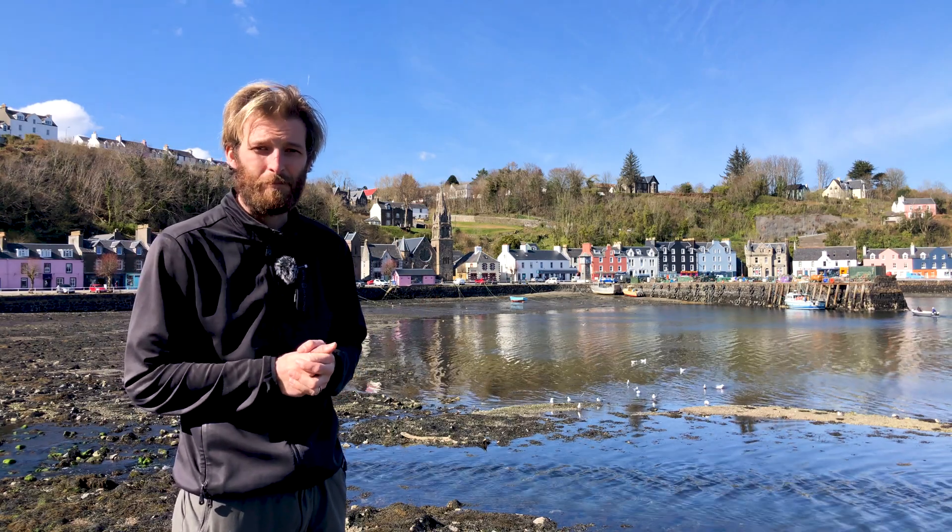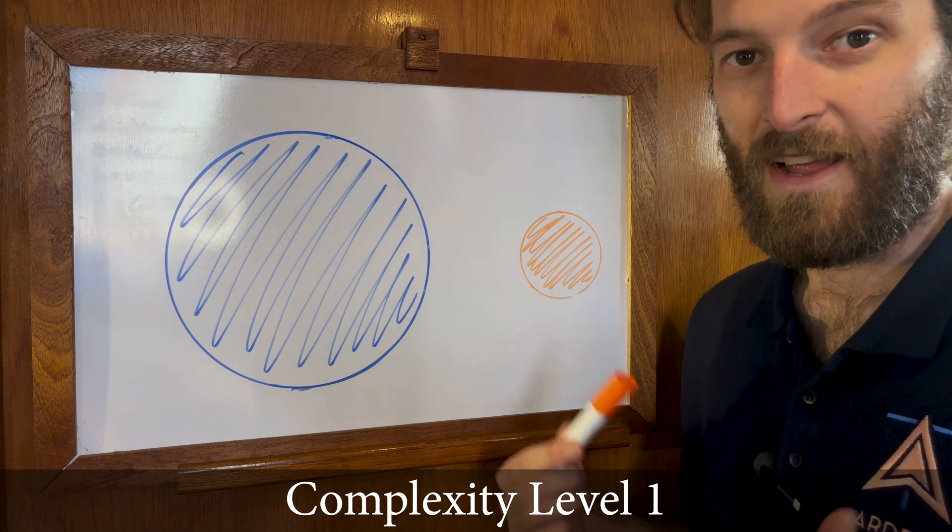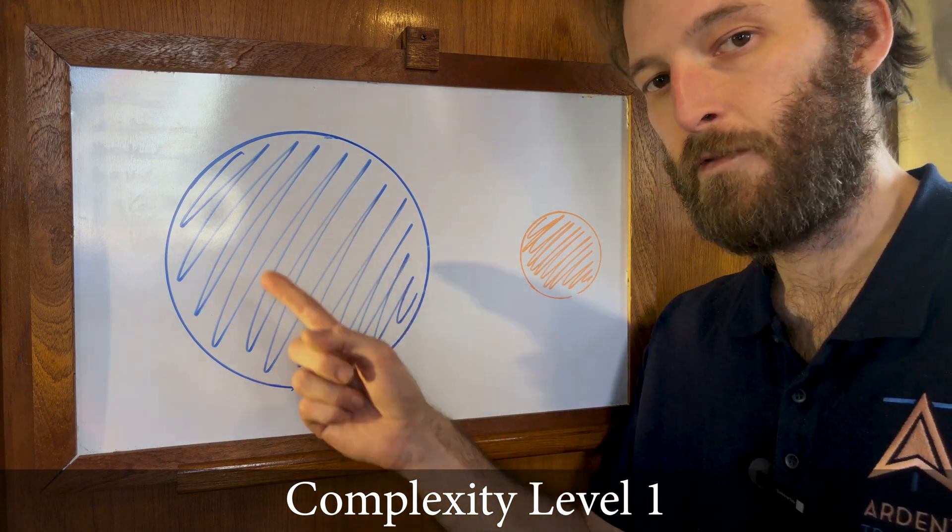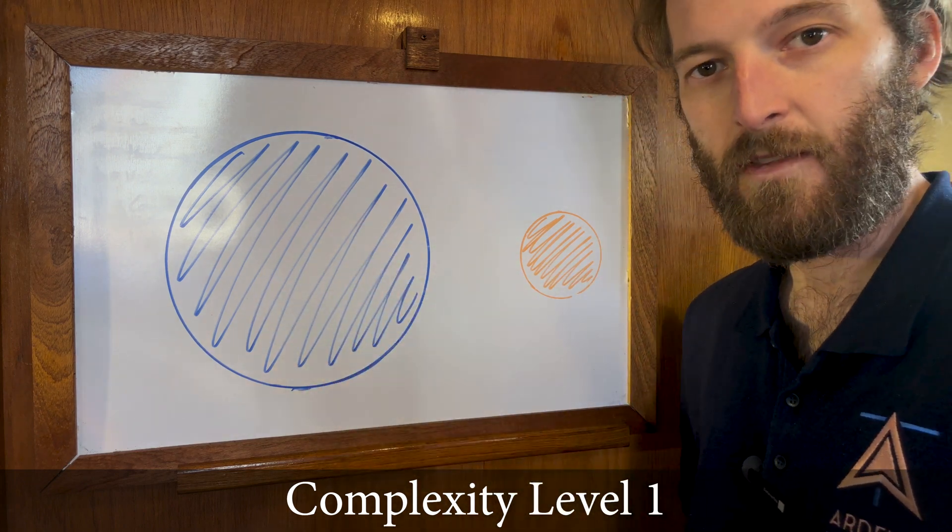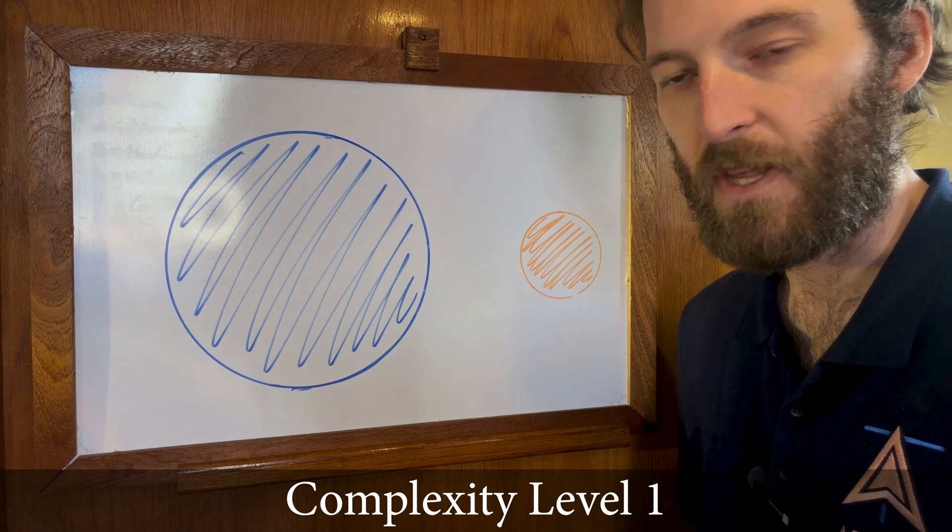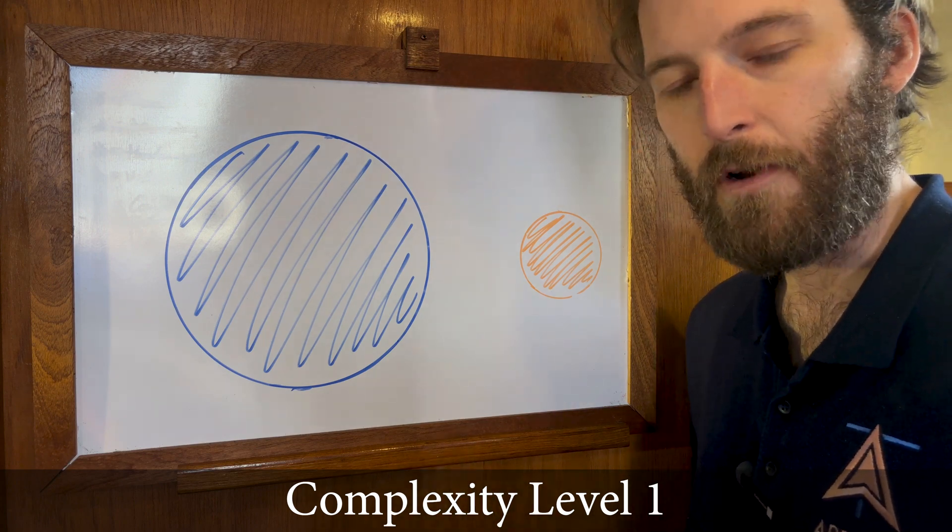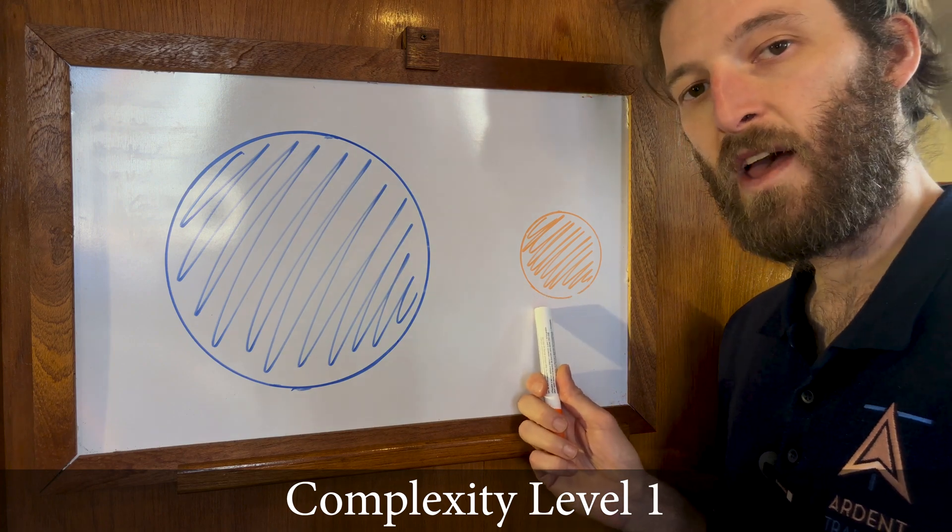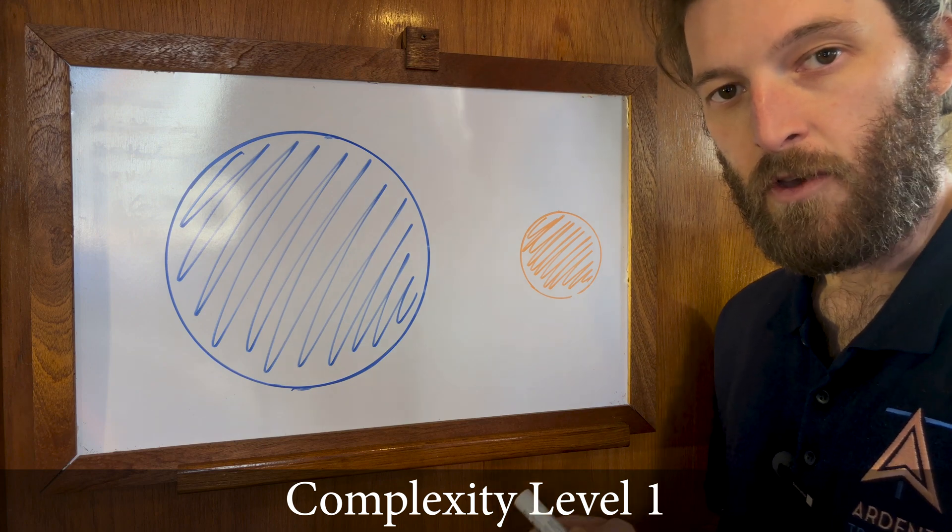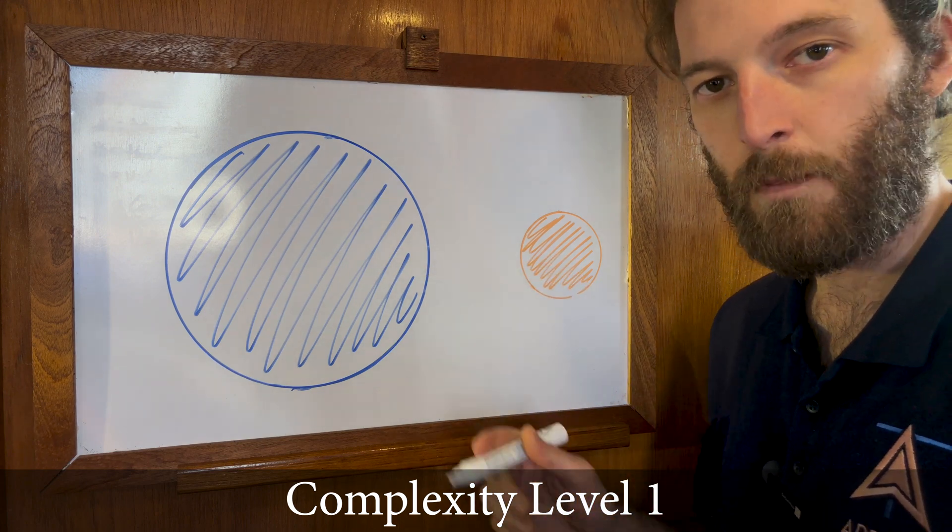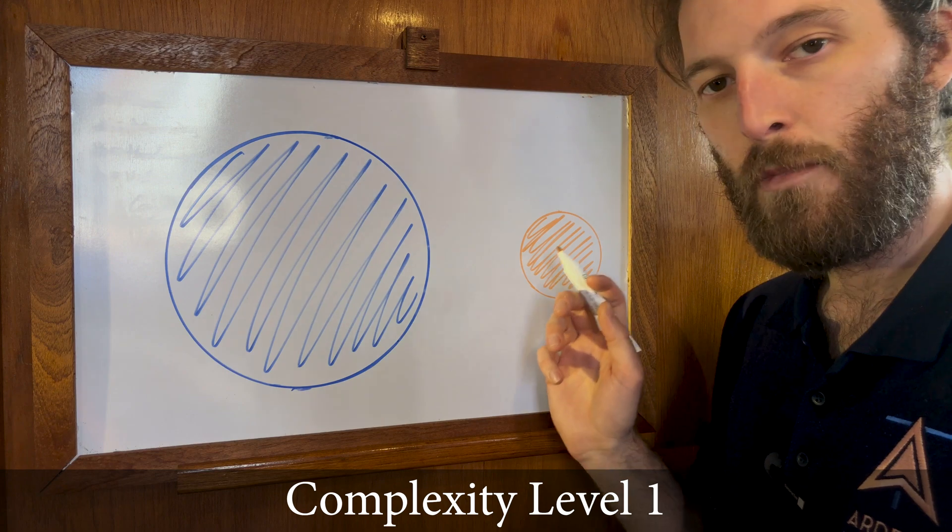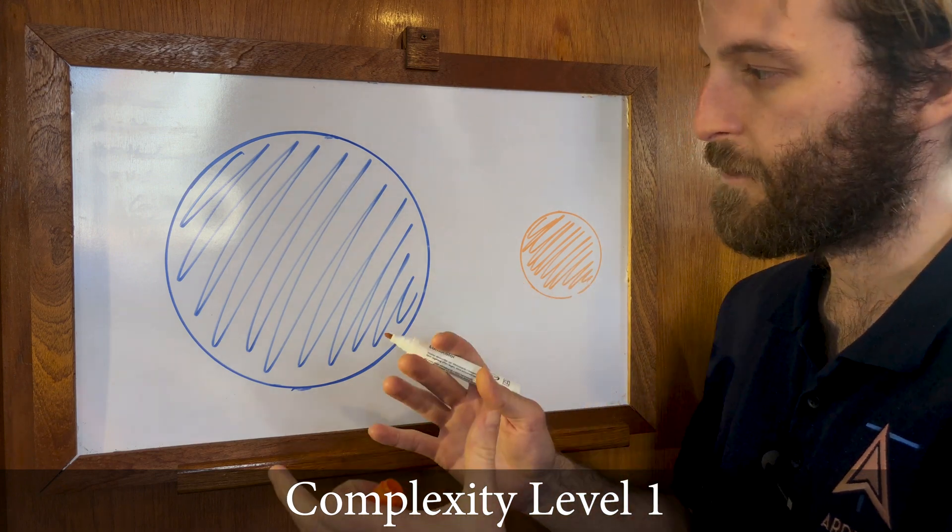Here we go, complexity level one. So what we've got here is the Earth, except in complexity level one the Earth has no land - this is all ocean, it's an ocean world. I told you we were going to oversimplify things. And over here we have the moon, a bit of a cheesy orange color. The moon is our primary cause of tides, and the reason for this is the moon's gravity has an effect on the Earth.